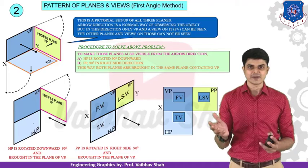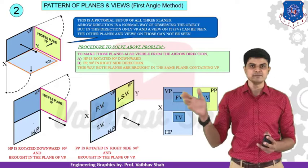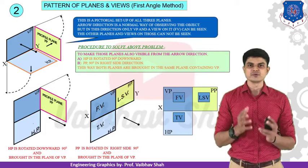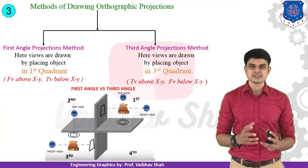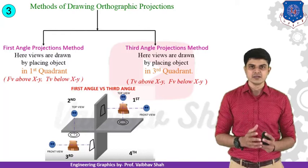We need to draw a horizontal line as the XY line, a vertical line as the X1Y1 line, and then specify HP, VP, and PP, placing the front view on the vertical plane and the side view in the appropriate location. There are basically two methods followed in orthographic projection: first is the first angle method, and second is the third angle method.